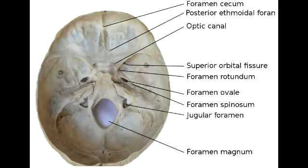What cranial nerve and vessels pass through the optic canal? Cranial nerve 2, the ophthalmic artery, and the central retinal vein pass through the optic canal.